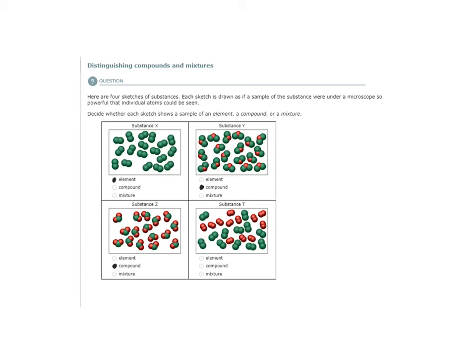In Substance T, I have two different kinds of molecules present, and they are mixed together. So because I have two different types of molecules, this would be a mixture and not a pure substance.